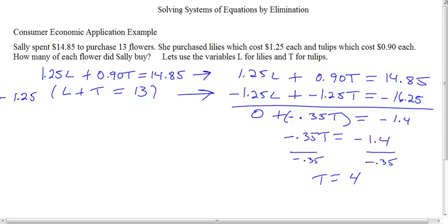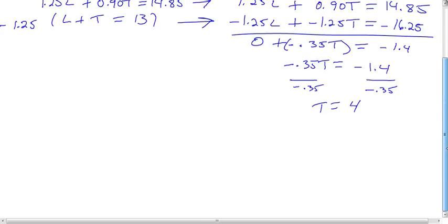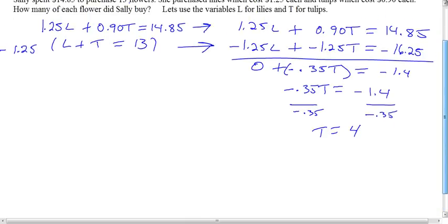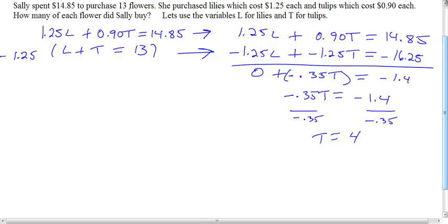Great, so we see she bought four tulips. Now all we need to do is substitute T back in again for either one of the equations.